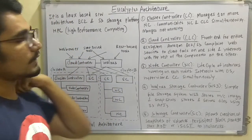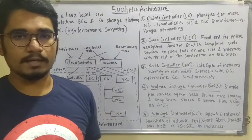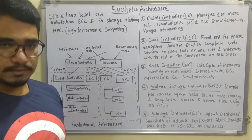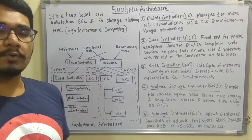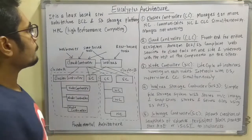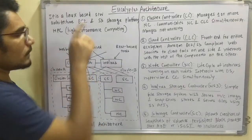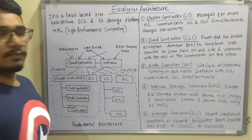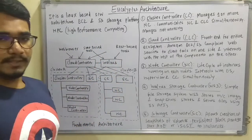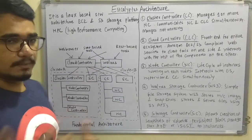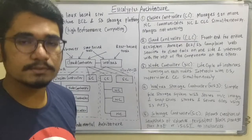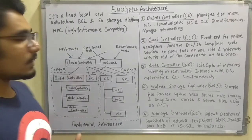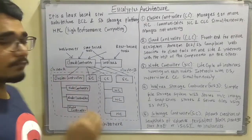First of all, Eucalyptus — it's the name of a medicinal plant, but it has nothing to do with this cloud. It is basically a Linux-based distribution or software architecture, and it provides two main components: EC2 and S3. EC2 stands for Elastic Cloud Compute, and S3 is Simple Storage System, which is a storage platform. It basically provides high performance computing, so whenever there is a demand for high processing or high performance, you go for this Eucalyptus architecture.